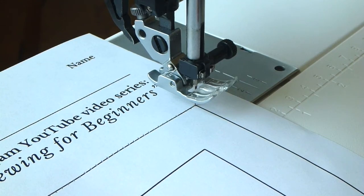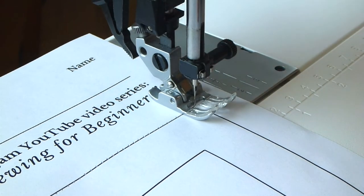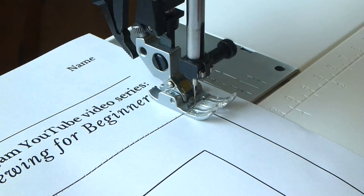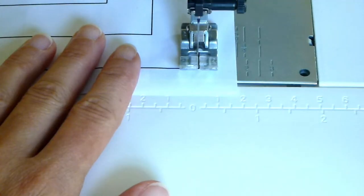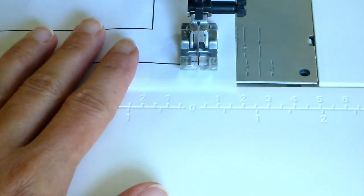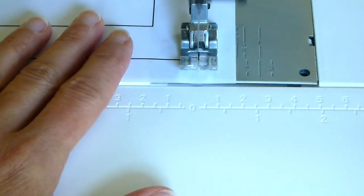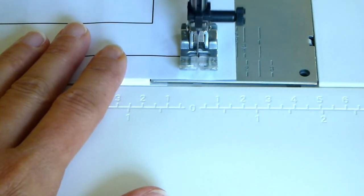Put your presser foot back down and sew forward until you approach the next corner. Take your foot off the foot pedal and turn the handwheel toward you for the next few stitches until the needle goes down into the next corner.